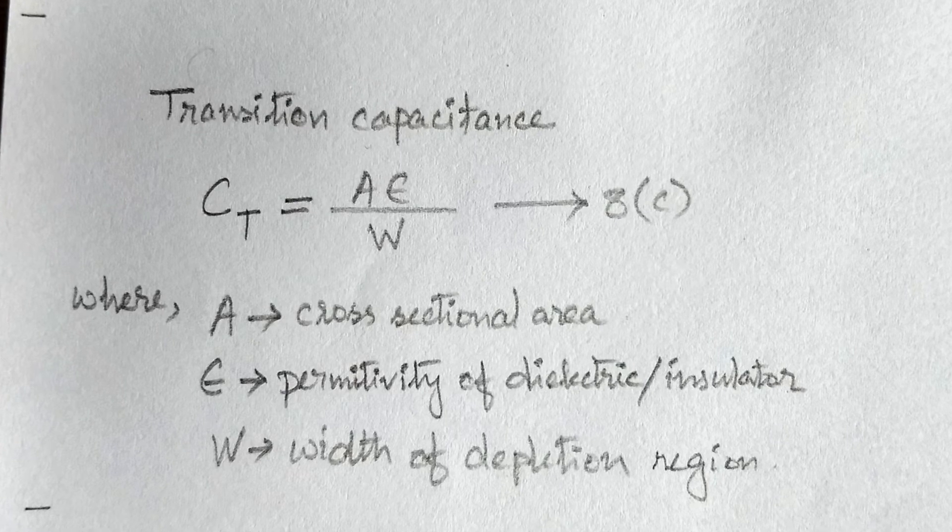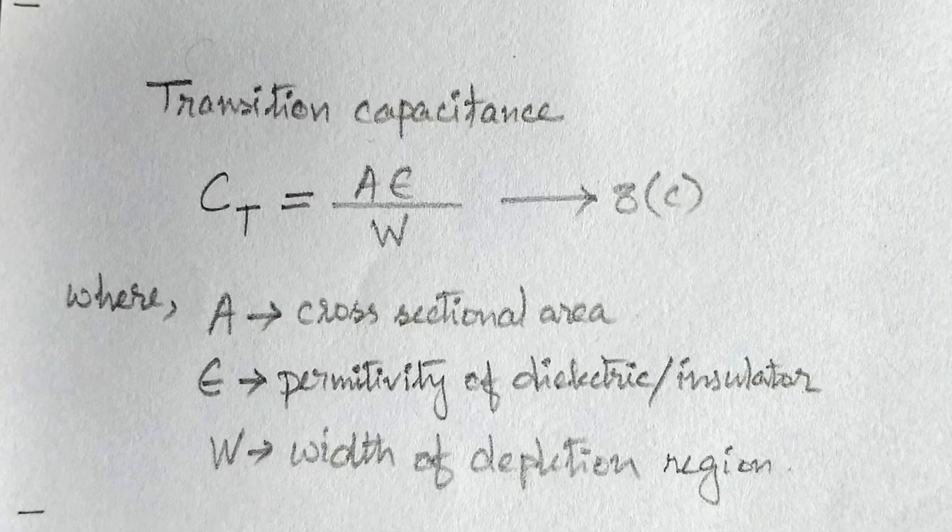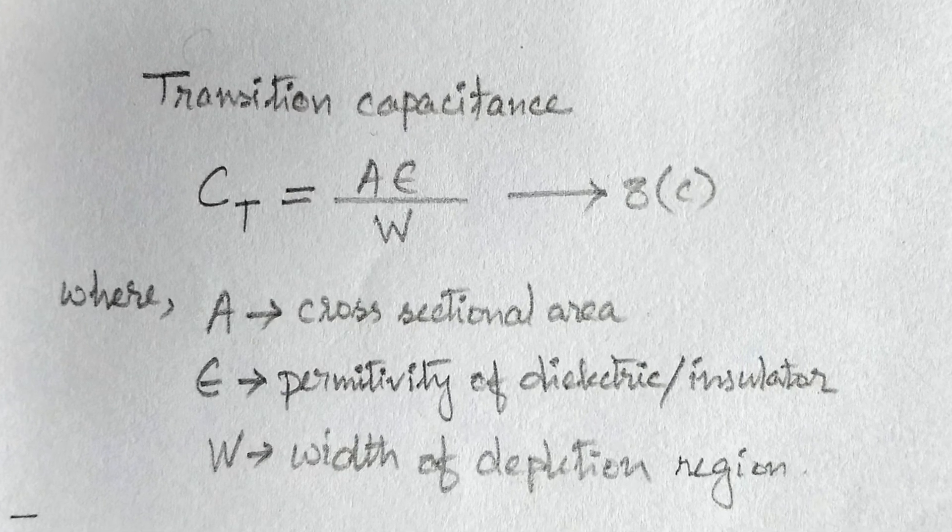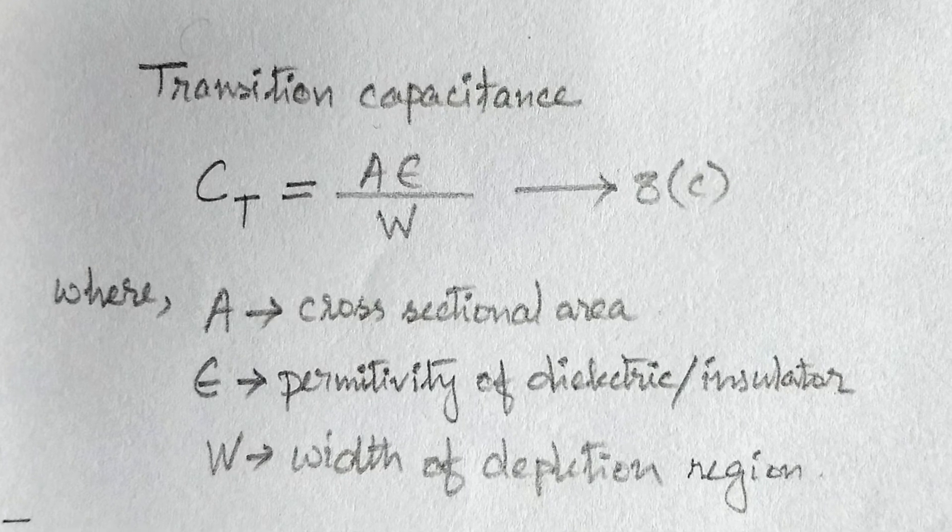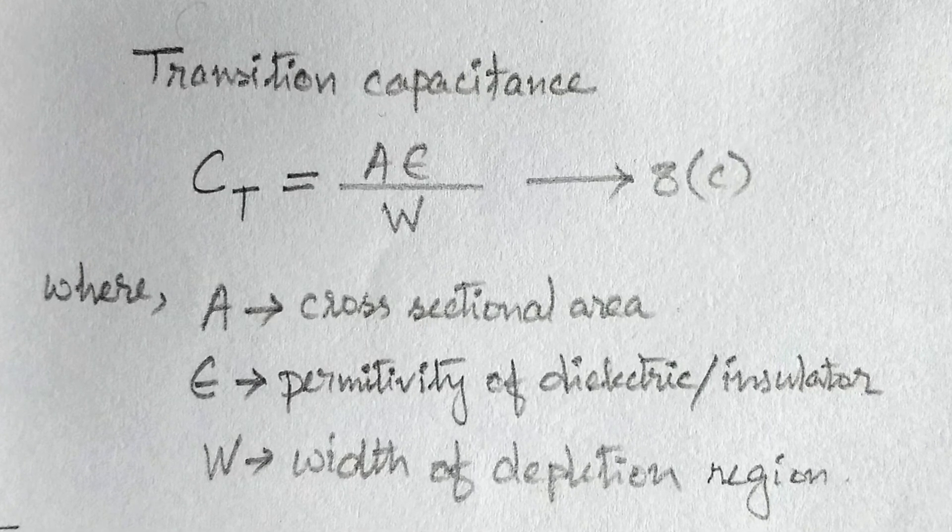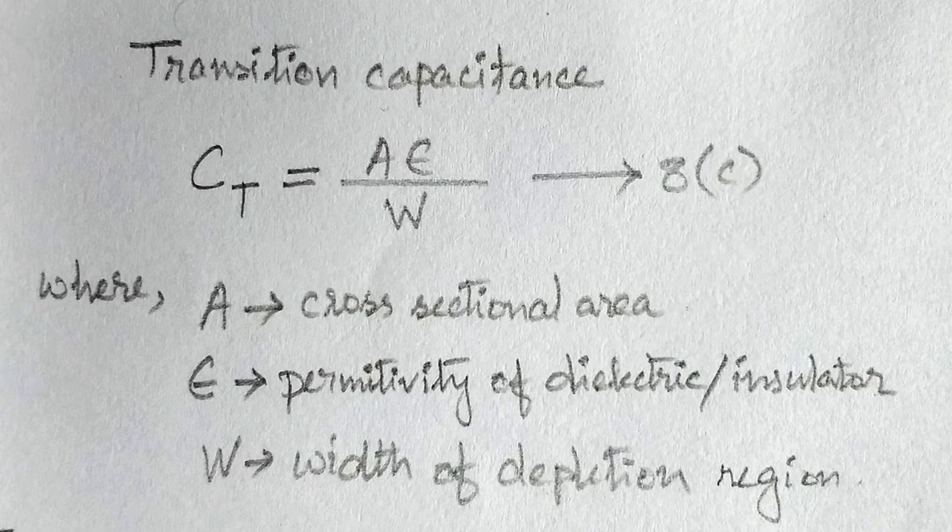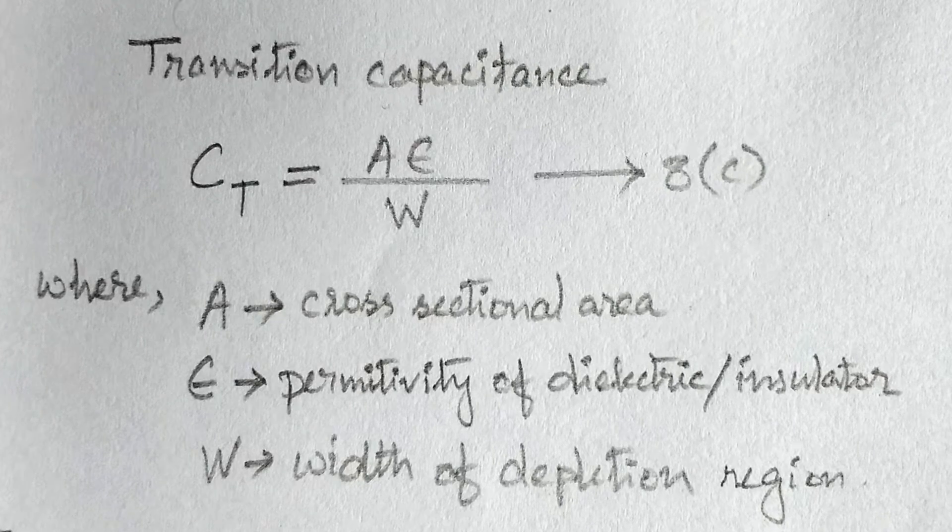Where capital A is the cross sectional area, epsilon is the permittivity of the dielectric or insulator, capital W is the width of the depletion region.